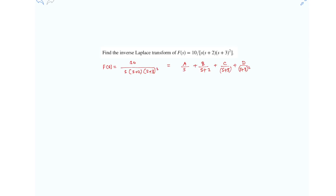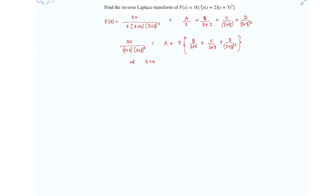Let us calculate the constants. Multiply both sides by s: we get 10 over (s+2)(s+3)² equals A plus s times [B/(s+2) + C/(s+3) + D/(s+3)²]. At s=0, the remaining three terms vanish, so A equals 10 over 2×3² which gives A = 5/9.